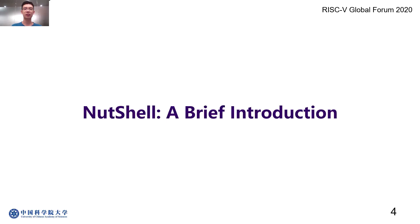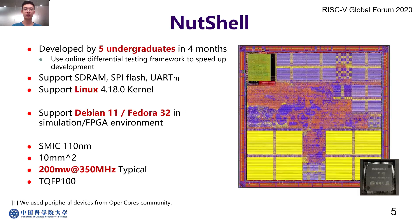Let's talk about the design of Nutshell, the processor we designed. We call this soft-chip Nutshell. Nutshell was developed by 5 to 8 students in 4 months. In this procedure, we used an online differential testing framework to speed up development. The processor core was developed in Chisel, while peripheral devices were developed in Verilog.